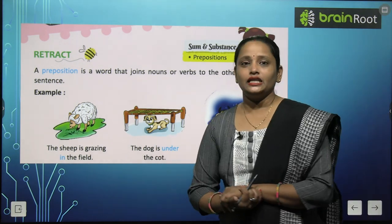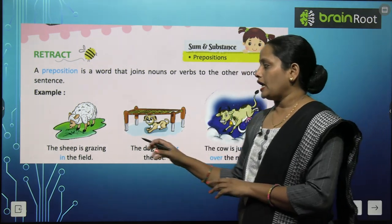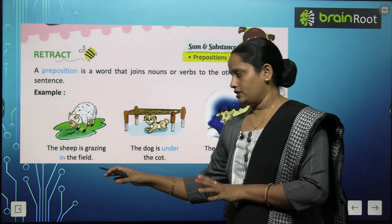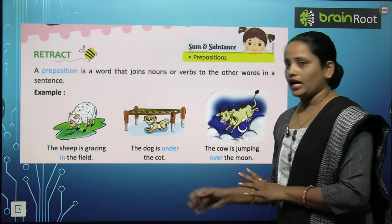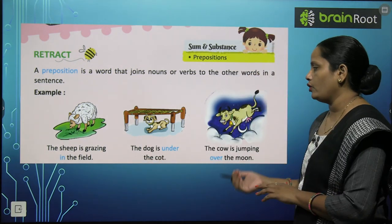So yahan pe humne kya padha? Teen words padhe: pehla tha 'in', doosara hai 'under', aur third hai 'over'.